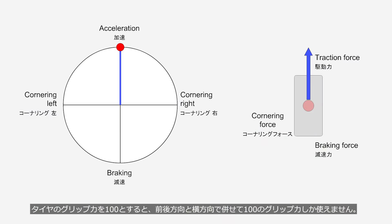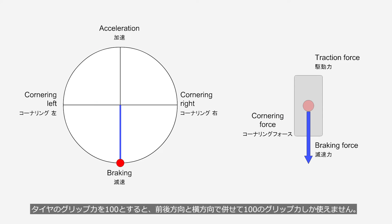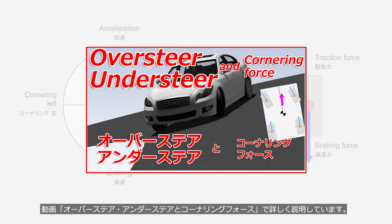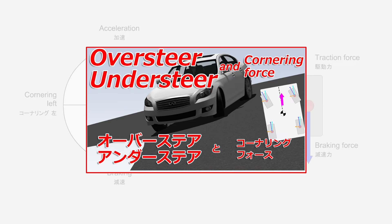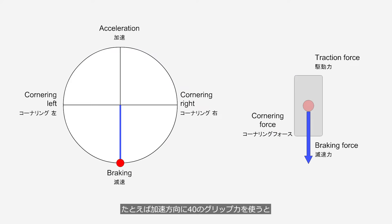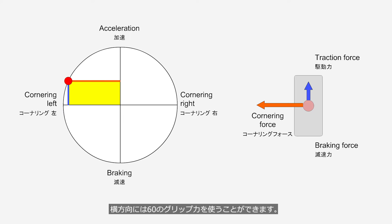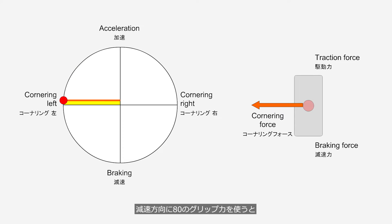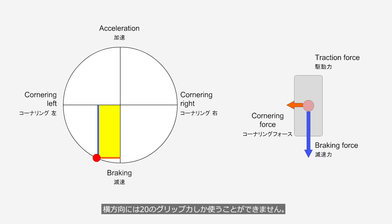If we consider the traction of the tires to be 100, only a combined total of 100 can be used for both longitudinal and lateral forces. For example, if 40% of traction force is used in the acceleration direction, 60% can be used in the lateral direction. Conversely, if 80% of traction force is used in the deceleration direction, only 20% can be used in the lateral direction.